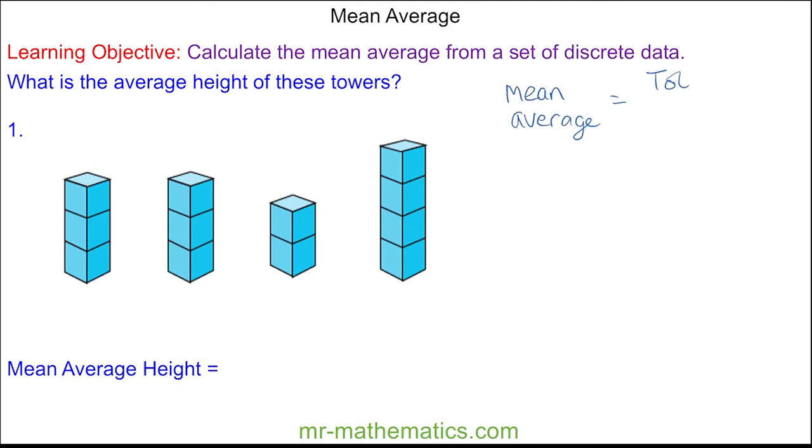The mean average is the total of the sum of the data divided by the sample size, which is how many pieces of data we have.